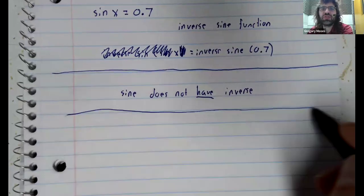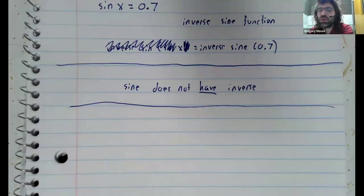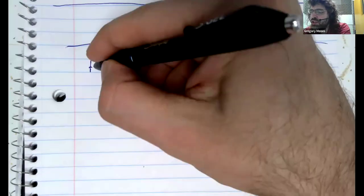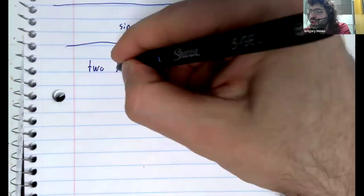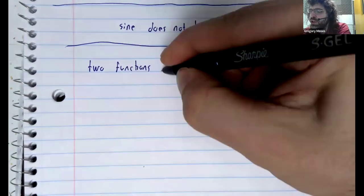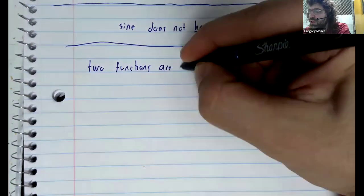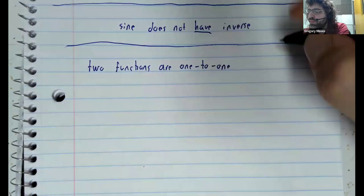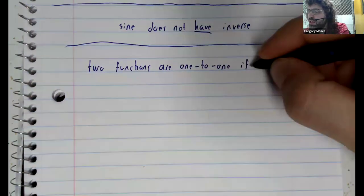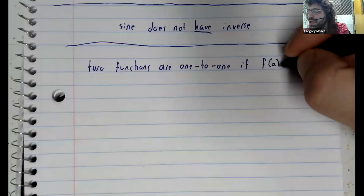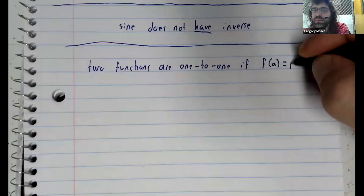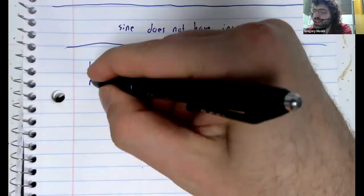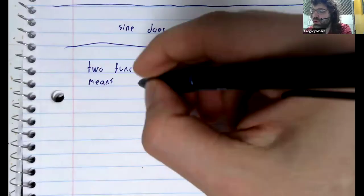However, two functions are called one to one if f of a equaling f of b means that a equals b.